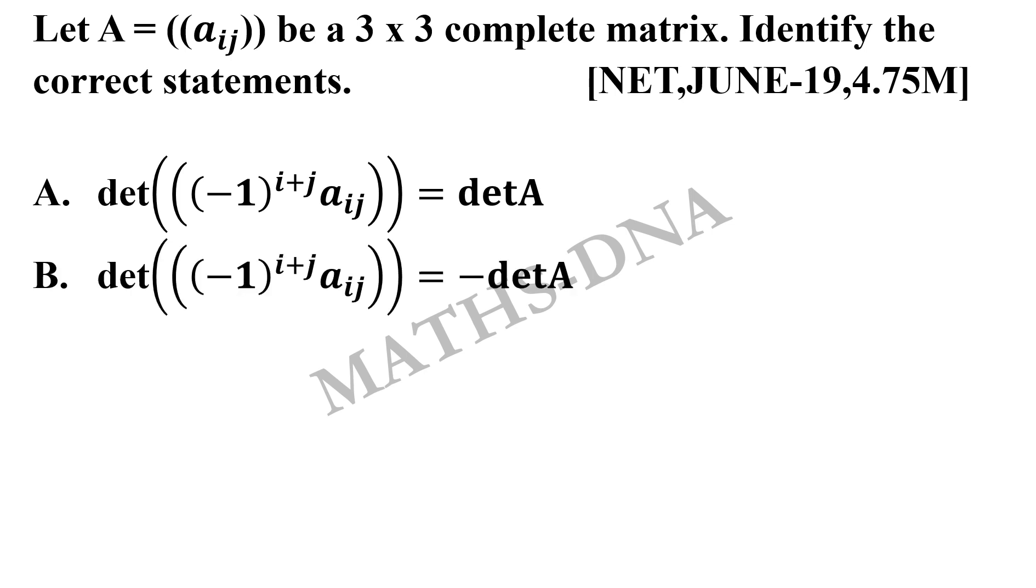Second, determinant of minus 1 raised to i plus j Aij equals to minus determinant of A. Option C, determinant of under root of minus 1 raised to i plus j Aij equals to determinant of A.